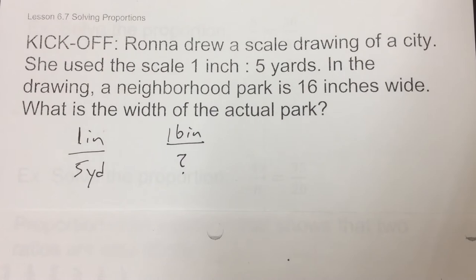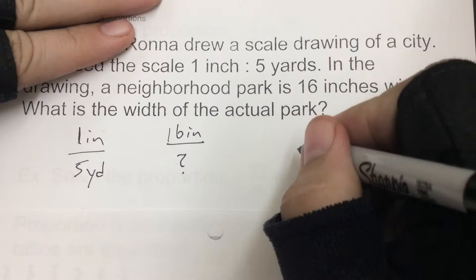Now, in the drawing, the neighborhood park is 16 inches wide, so that's going to go on top, and we're looking for the bottom here. So, what is the width of the actual park? So, for every inch is 5 yards, so we're going to multiply 16 by 5 and get 80 yards.